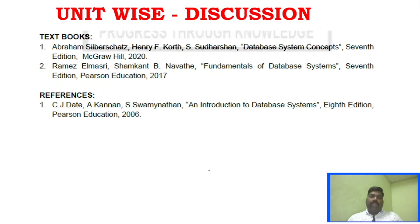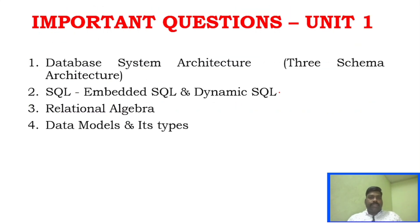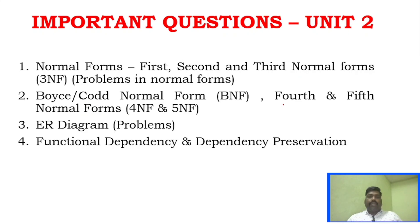Now for the question-wise discussion: we will look at three question papers to identify patterns. For Unit 1, the sure-shot questions include database system architecture, SQL, embedded SQL, dynamic SQL, relational algebra, and data models. You can learn about four questions from Unit 1. Three-schema architecture is a key topic.